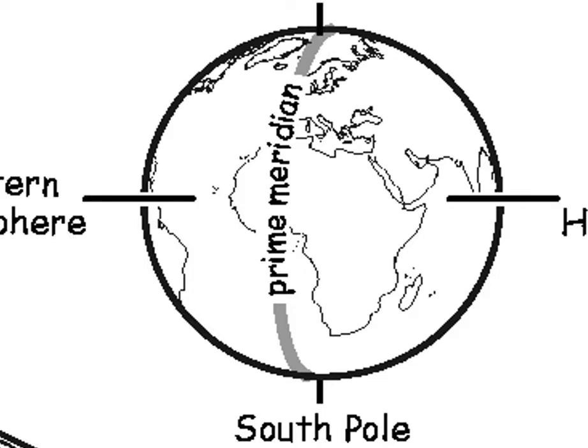As you know, hemi means half, and sphere means circle. So we are taking the left half of the globe as the Western Hemisphere, and the right half as the Eastern Hemisphere.